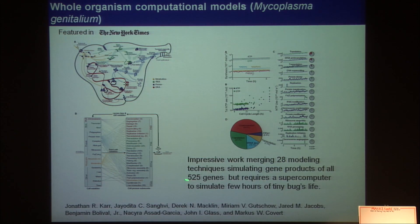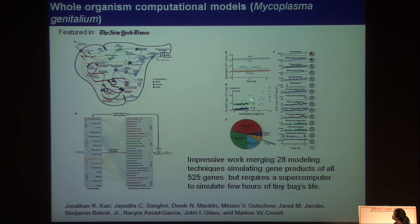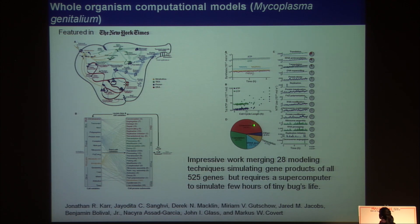Another work done by Markus Covert's lab was trying to model the cell cycle of Mycoplasma genitalium. This is probably the first model where scientists were able to go, on the computer, from genotype to phenotype.